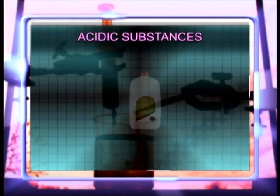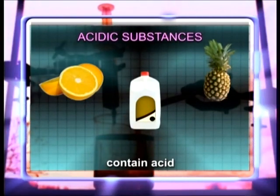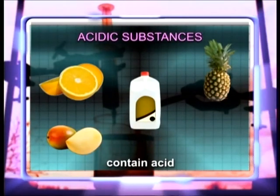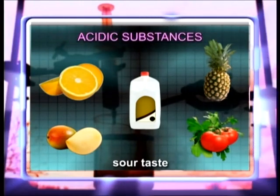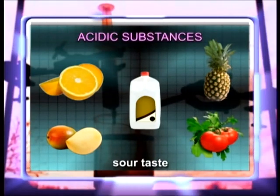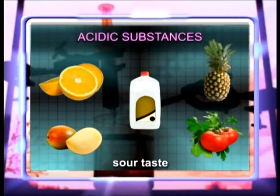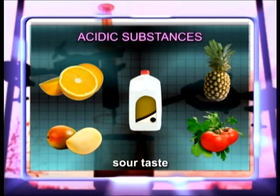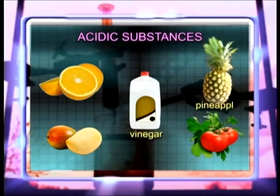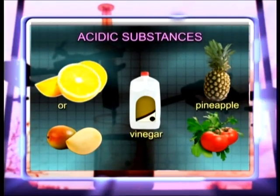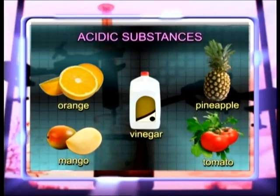Acidic substances are substances that contain acid. Examples of acidic substances are vinegar, pineapple, orange, mango, and tomato.